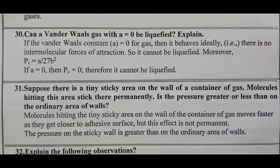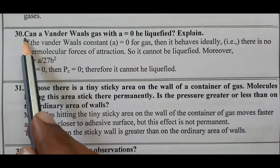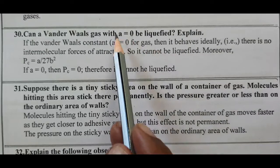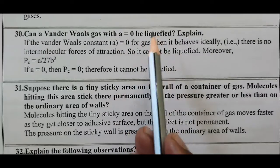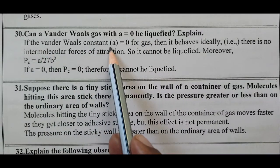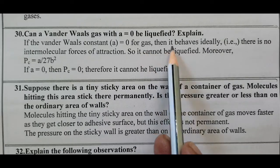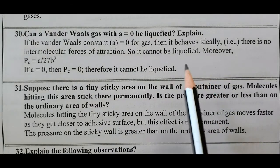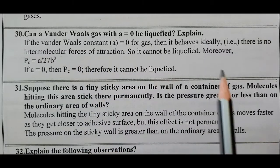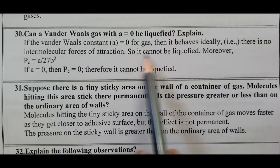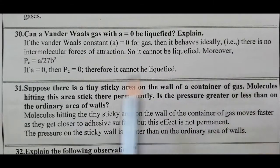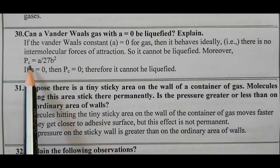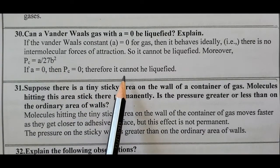Question number 30: Can a Van der Waals gas with A equal to 0 be liquefied? Explain. If the Van der Waals constant A equals 0 for a gas, then it behaves ideally — that is, there are no intermolecular forces of attraction, so it cannot be liquefied. Moreover, the critical pressure Pc = A / (27b²). If A equals 0, then Pc equals 0. Therefore, it cannot be liquefied.